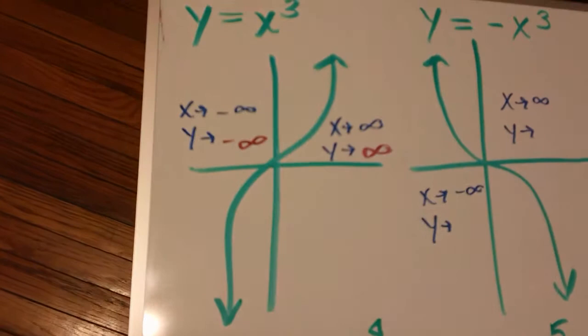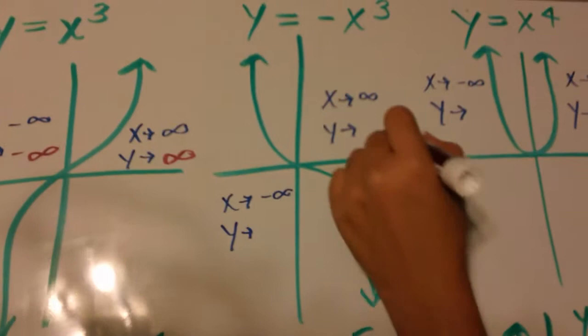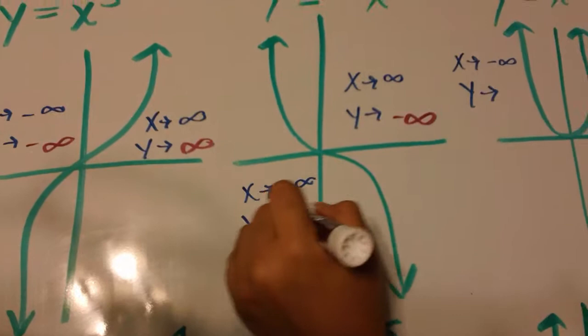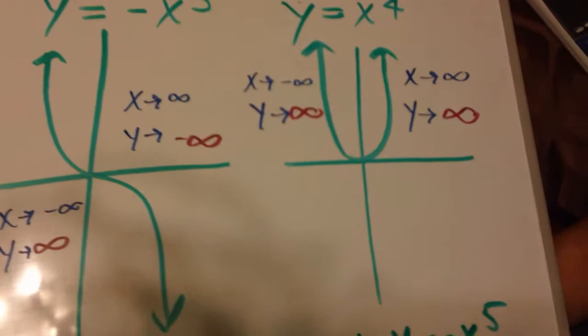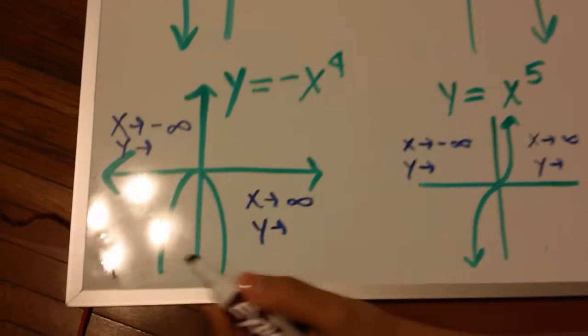This one, as our x approaches infinity, our graph's going down, so it's negative infinity. Our x's are getting smaller, and our y's are getting bigger. Now, both of these are positive, so both y's are positive infinity. We look at this one down here. They're both negatives, so in both cases, they approach negative infinity.